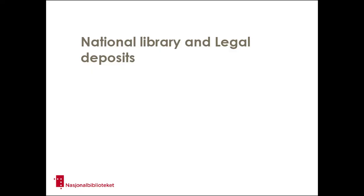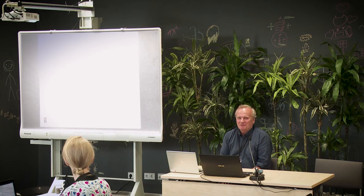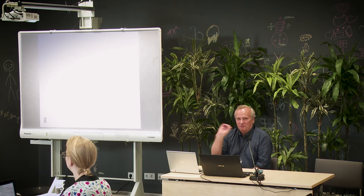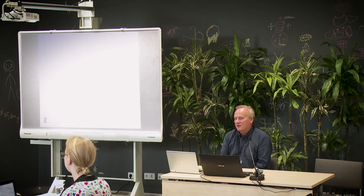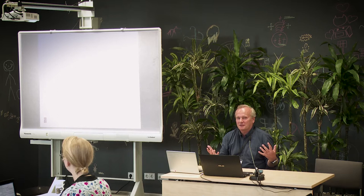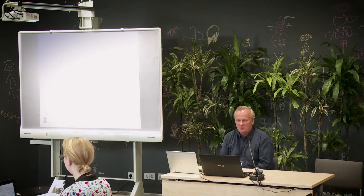Starting with the National Library: how do libraries get texts? In Norway, it's through legal deposits — everyone who publishes something, a newspaper or a book, has to deposit a copy at the library. Otherwise, libraries were sort of private collections. The oldest library in Norway was based on private collections and not on legal deposits.